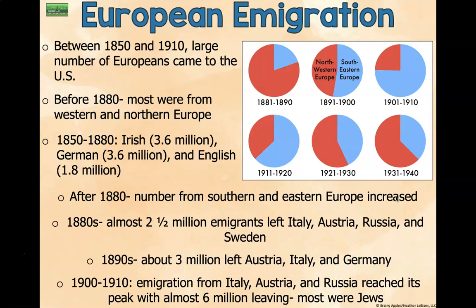Between 1850 and 1910, a large number of Europeans came to the United States. On the pie charts, red represents northwestern Europe and blue represents southeastern Europe. Before 1880, most were from western and northern Europe — about 3.6 million Irish, 3.6 million Germans, and 1.8 million English. After 1880, numbers from southern and eastern Europe increased. By the 1880s, almost 2.5 million immigrants left Italy, Austria, Russia, and Sweden. By the 1890s, about 3 million left Austria, Italy, and Germany. Between 1900 and 1910, immigration from Italy, Austria, and Russia reached its peak with almost 6 million leaving, most of whom were Jewish.